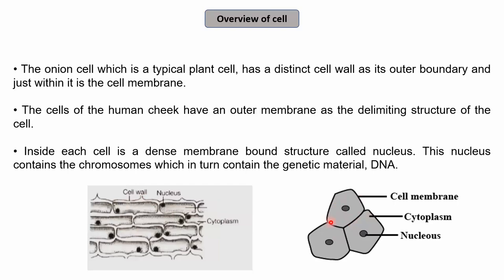Inside each cell, whether plant or animal, there is a dense membrane-bound structure called the nucleus. The nucleus is present inside the cell and contains chromosomes, which in turn contain the genetic material DNA. This chromosome and genetic material together make up the nucleolus. All other components are broadly similar between plant and animal cells — the first differentiating thing is just the presence of the cell wall.